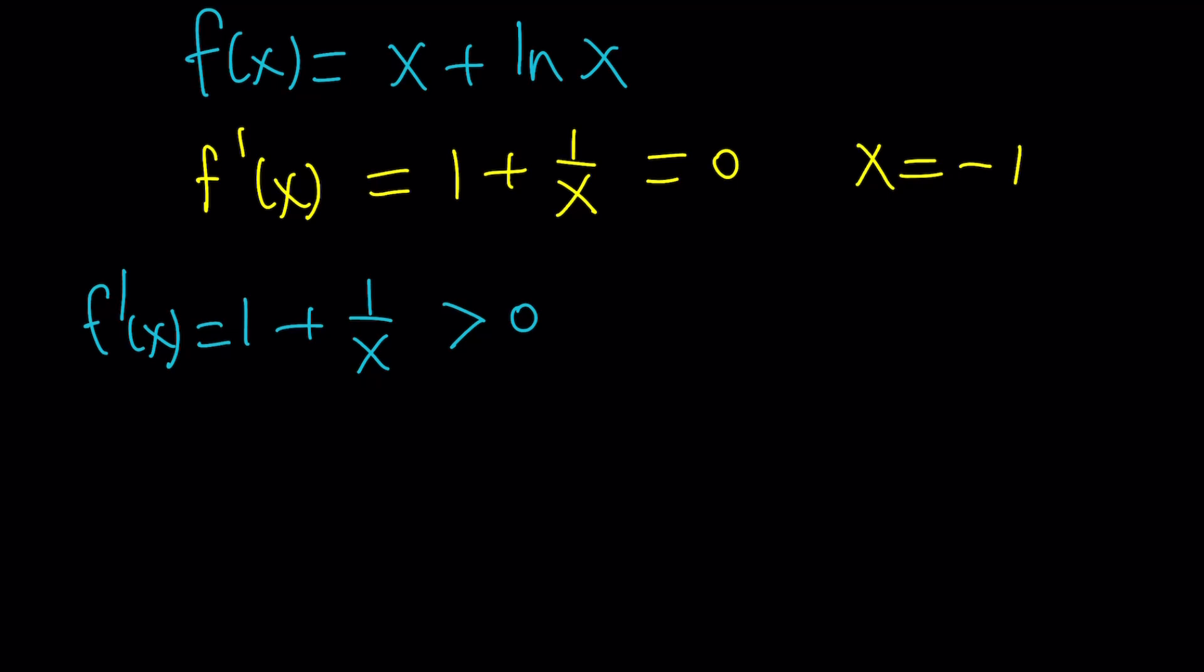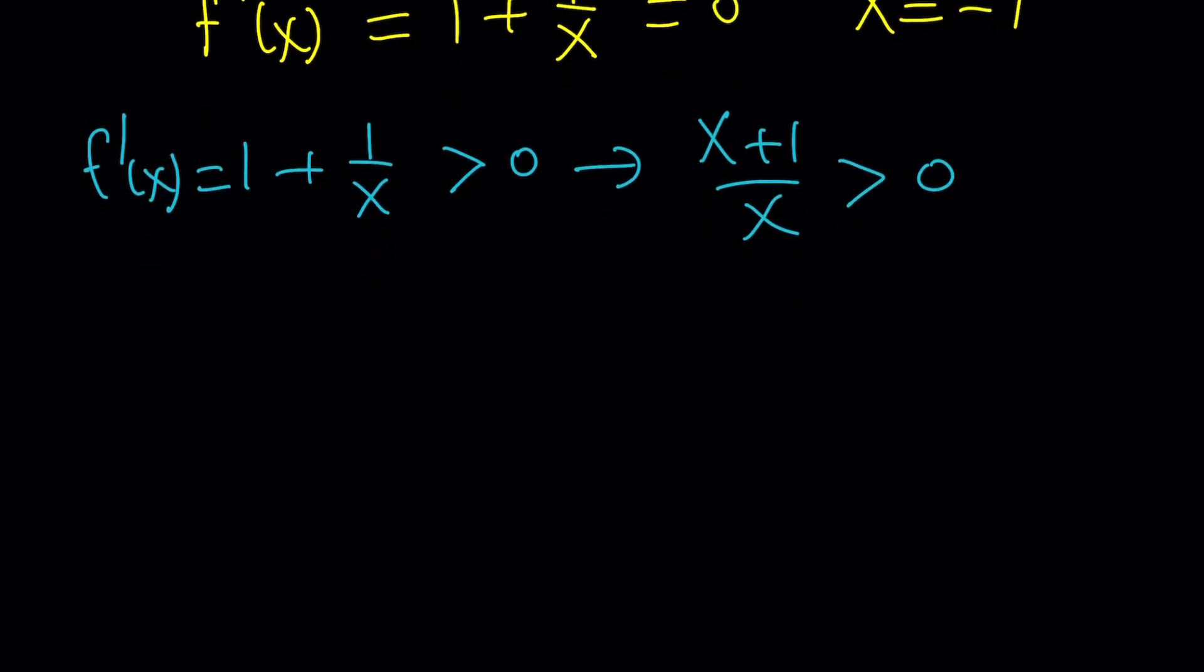Instead of setting it equal to zero let's see where this derivative is going to be positive because I want to know where the function is increasing. If the first derivative is positive that means our function is increasing on that interval. We're going to solve an inequality but keep everything on the same side and keep zero on the other side.